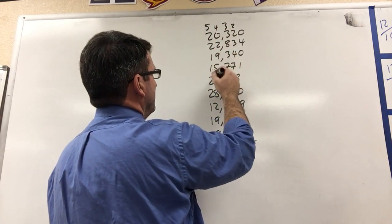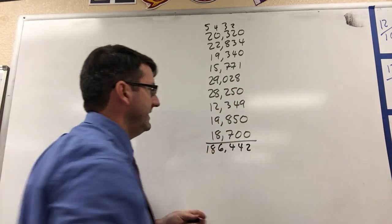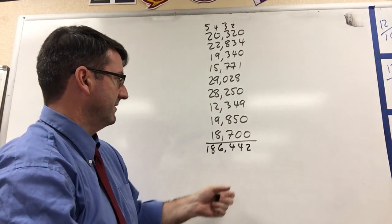Counting through: 6, 7, 8, 9, 10, 11, 12, 13, 14, 15, 16, 17, 18, 186,442. If we add all those up,